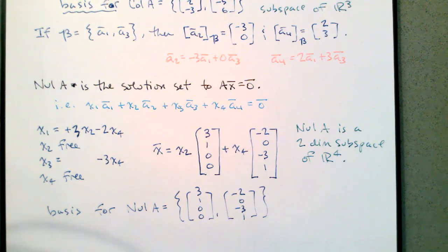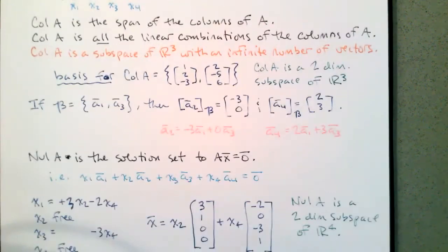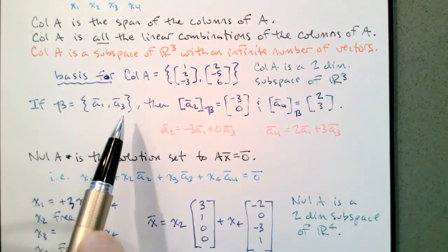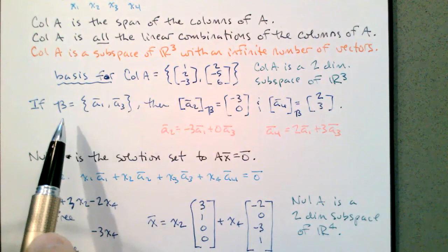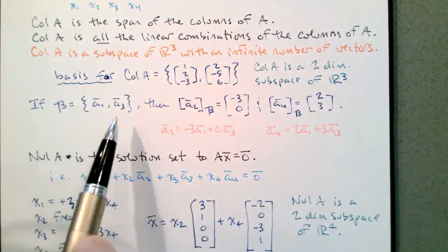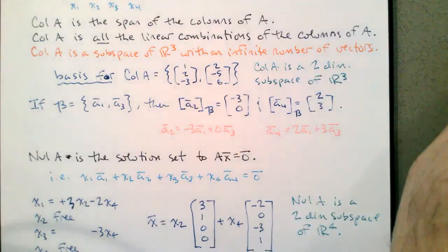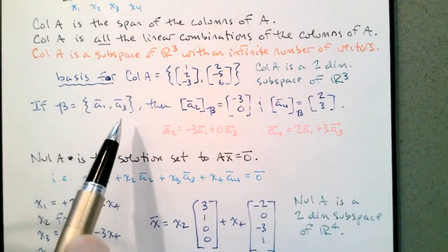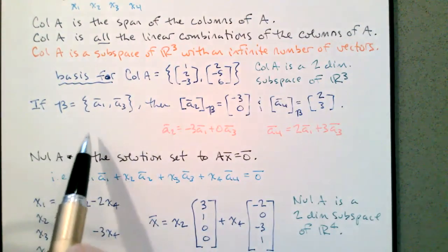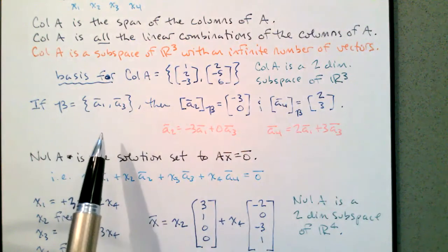Another thing to note: going back to the columns of a matrix as a set of vectors versus the matrix itself. The basis B — the set {A1, A3} — is a set of vectors. You wouldn't say B has pivots because B is not a matrix; it's a set of vectors. A set of vectors does not have pivots — a matrix has pivots. So if B is this set of vectors, you wouldn't write B equals the matrix [A1 | A3]; this set of vectors is a basis, not a matrix.